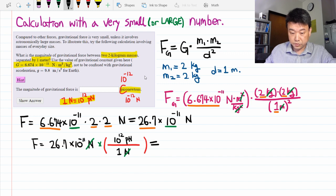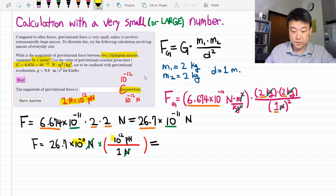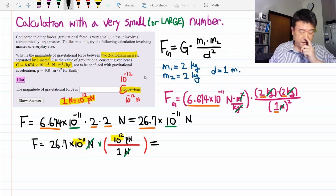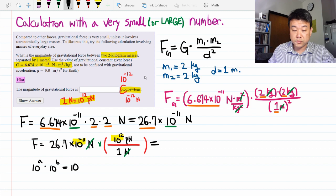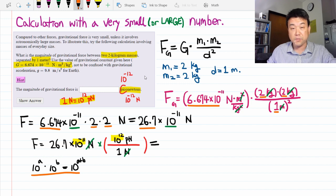Now here, to do the multiplication of 10 to minus 11, 10 to the 12, you do a little exponential algebra. I hope people remember this. When you have 10 to the power of a multiplying 10 to the power of b, that's equal to 10 to a plus b. This is like saying you multiply a number by 10 a number of times, and then you continue multiplying by 10 another b number of times.